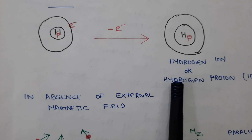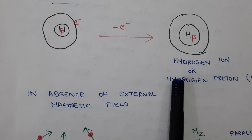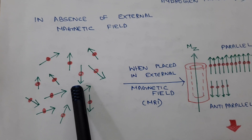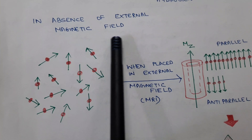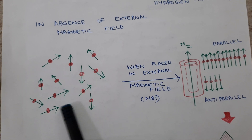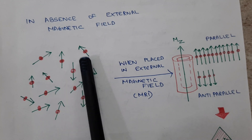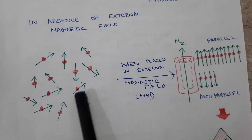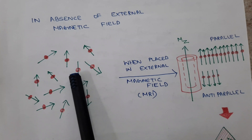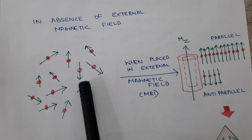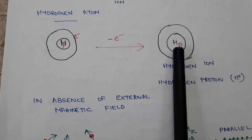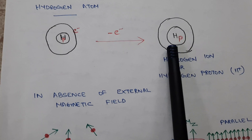Now, what happens to the hydrogen ion when the human body is subjected to an MRI machine? In the absence of an external magnetic field, inside the human body hydrogen protons are randomly arranged or randomly oriented — they do not have a particular direction. They constantly move and are randomly arranged. The hydrogen proton carries a positive charge, since it has a single proton and no electron.